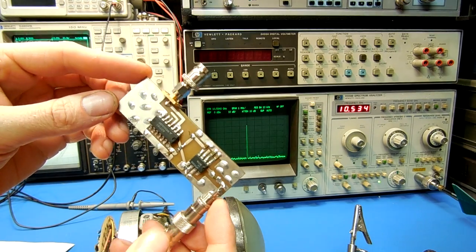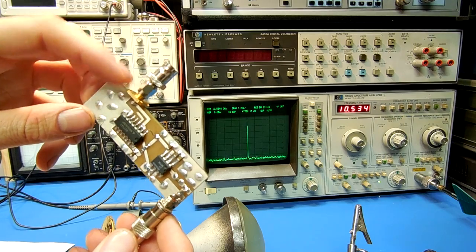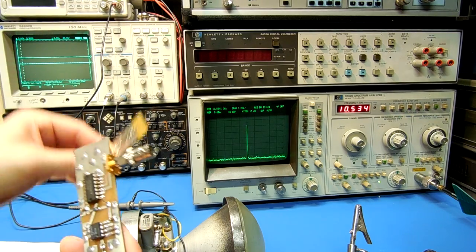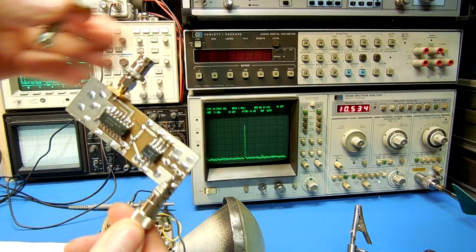Here's what the example pulse position modulator board looks like. This output connector goes to the FET modulator, and this connector down here is the modulation input.